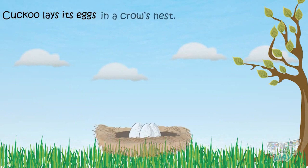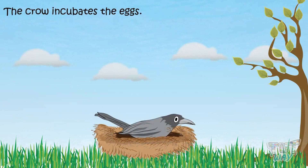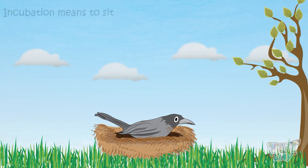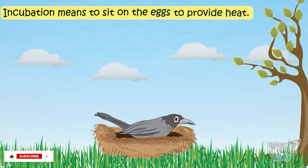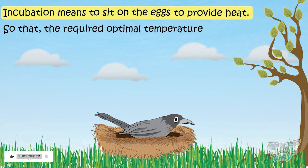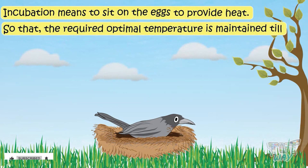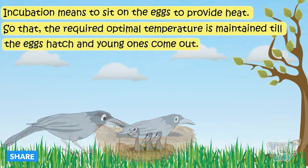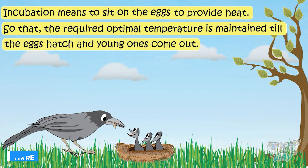A cuckoo lays its eggs in a crow's nest, and the crow incubates the eggs. Incubation means to sit on the eggs to provide heat, so that the required optimal temperature is maintained until the eggs hatch and the young ones come out.